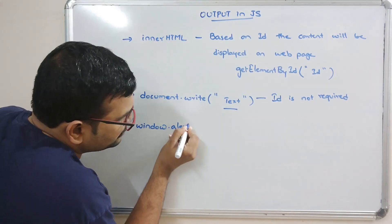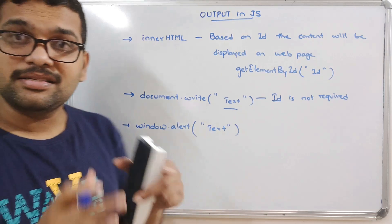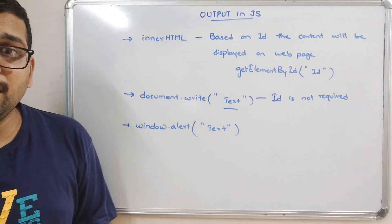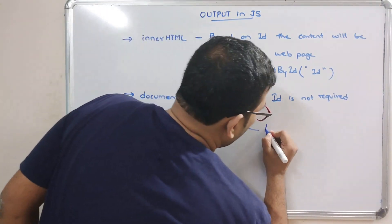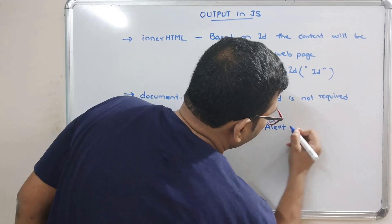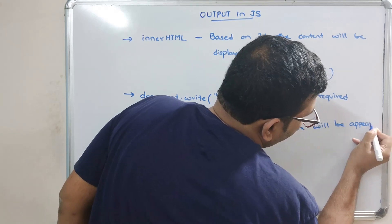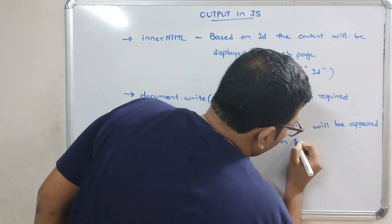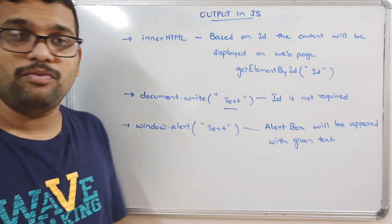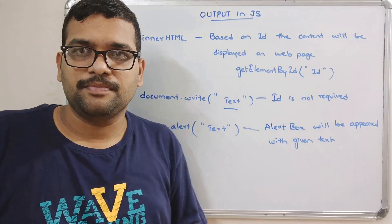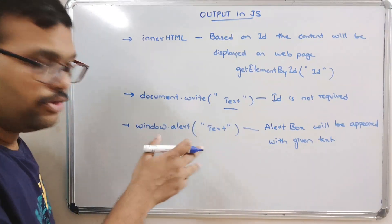The next one is window.alert, where we can write some text. window.alert means an alert box will be displayed, and the content will be displayed on that alert box. The alert box will appear with the given text — whatever text we write will be displayed on the alert box.